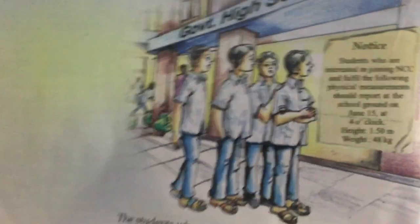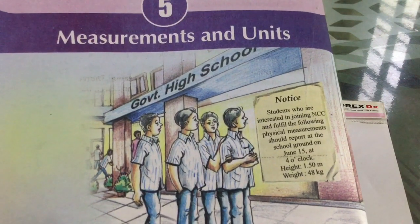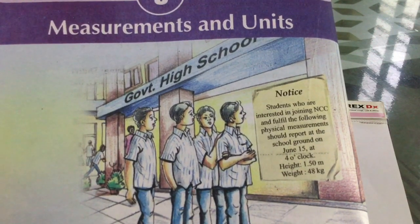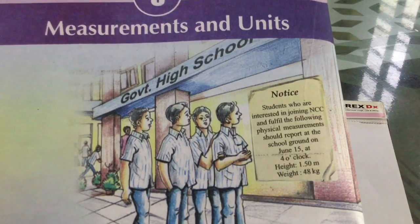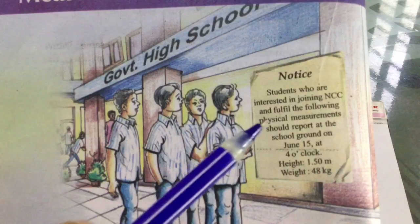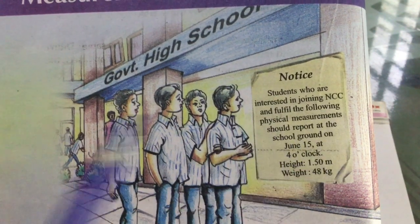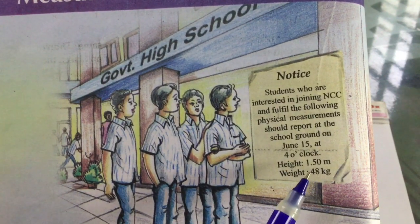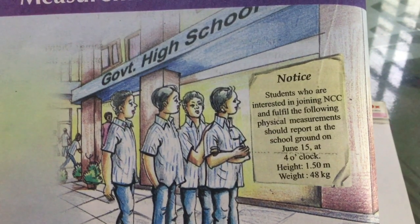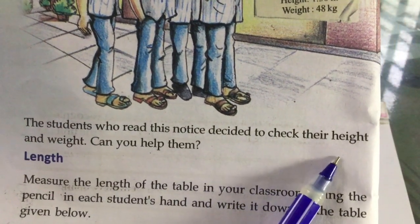The first chapter is measurements and units. Students who are interested in joining NCC and fulfilling the following physical measurements should report at the school ground on June 15 at 4 o'clock. Height: 1.50 m, weight: 48 kg. The students who read this notice decided to check their height and weight.